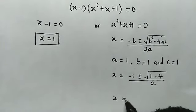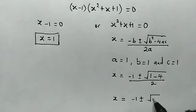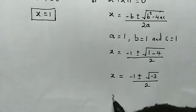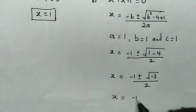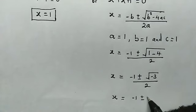So here we have the complex solution: negative 1 plus or minus square root of negative 3 divided by 2. From here we have x is equal to negative 1 plus or minus, first of all square root of negative 1 is iota.